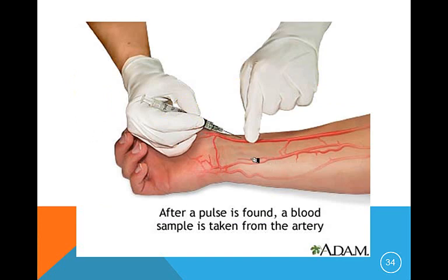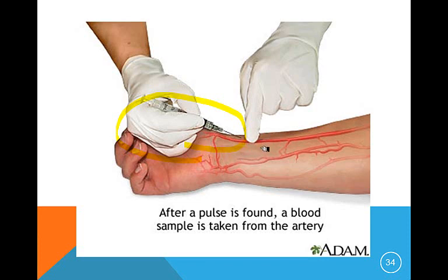This is a patient getting an arterial blood gas done. You need to have ice waiting unless you can run the test right at the bedside. The physician or respiratory therapist performs this procedure. It's more painful than a venous draw because it's a little deeper, and you have to apply pressure for at least five to ten minutes — longer if the patient is on a blood thinner — because this is an artery, and if you don't put enough pressure on it, the blood can start spurting.